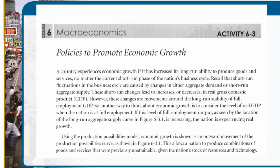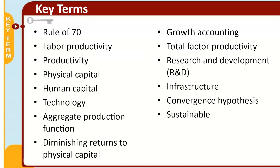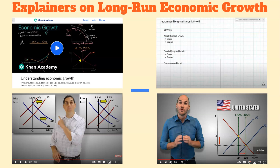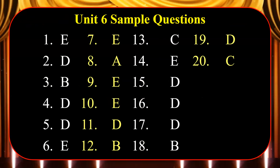Activity 6-3 is about policies that promote this type of economic growth — check that out, and we'll look at it in class as well. There are a significant number of summaries to check out, along with key terms to know: remember the Rule of 70, labor productivity, aggregate production function, diminishing returns to capital, and there are a number of explainers to help take you through those. Answers to the take-home quiz questions are posted on the module section of my MCPS classroom — check your answers and come to class with questions.